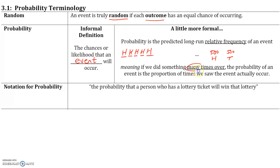So, if we did something many times over, such as a thousand times, the probability of an event — the probability of the coin landing on heads — is about half. Probability is: if we did something over and over again, the event probability is a proportion of times we saw the event actually occur.